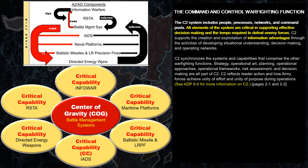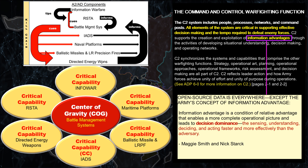Now, let's quickly take a deeper look at the meaning of information advantage. We like the definition Maggie Smith and Nick Stark use in their article, 'Open Source Data Is Everywhere Except the Army's Concept of Information Advantage.' The definition is: information advantage is a condition of relative advantage that enables a more complete operational picture and leads to decision dominance, defined as the sensing, understanding, deciding, and acting faster and more effectively than the adversary.